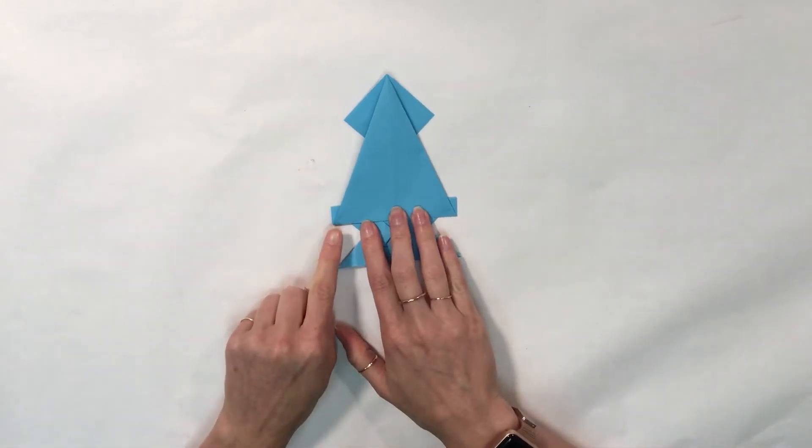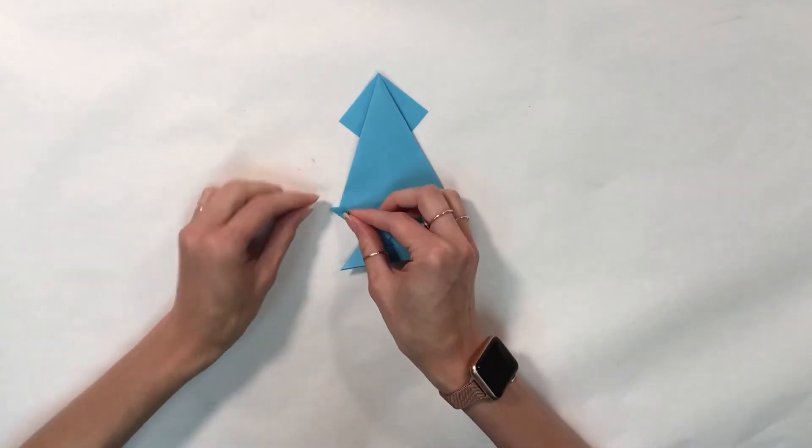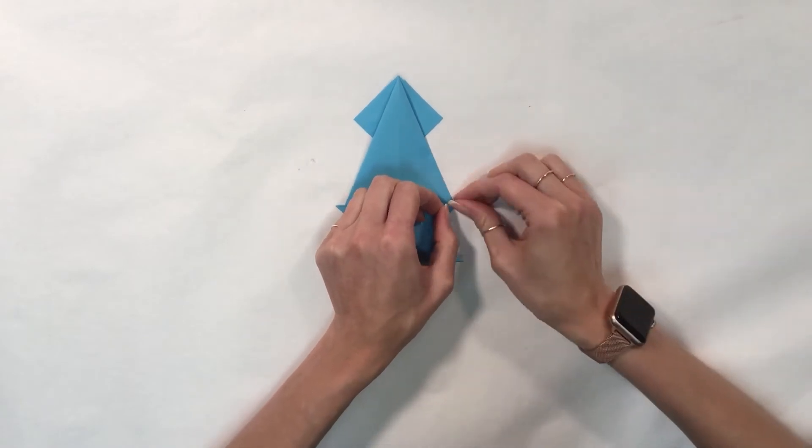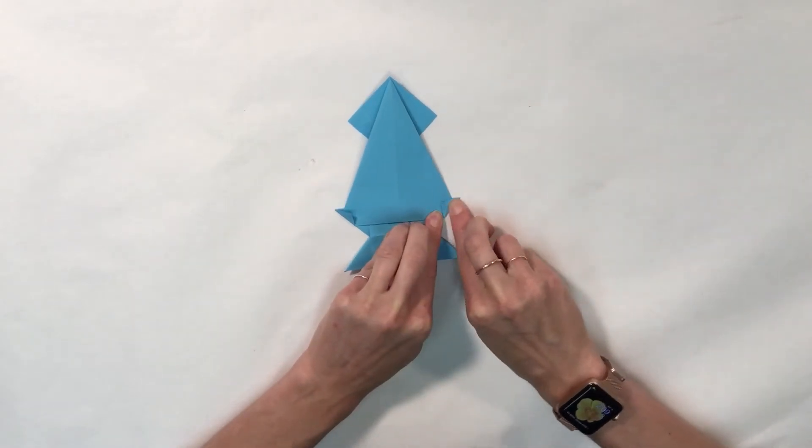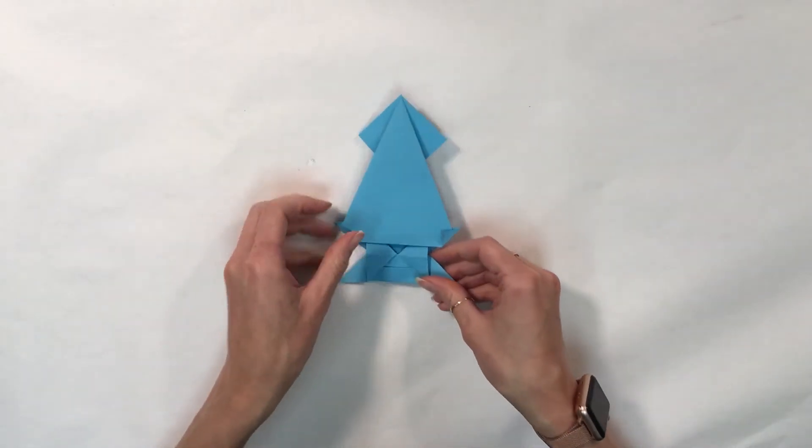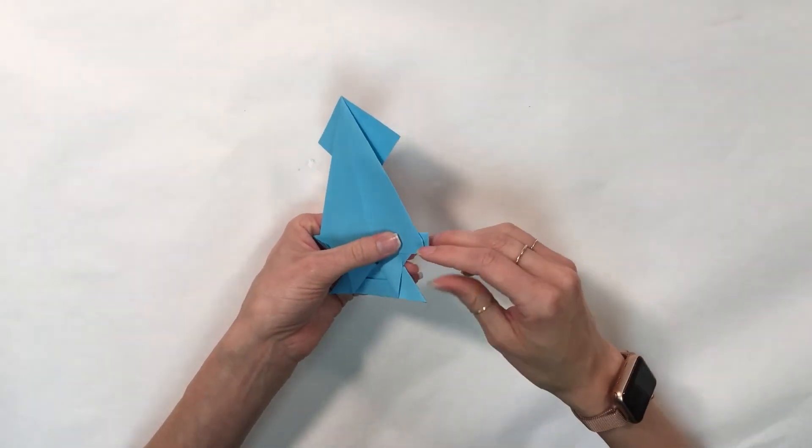Then I'm going to fold the corner up. Once I've got both corners folded, I'm going to open the triangle.